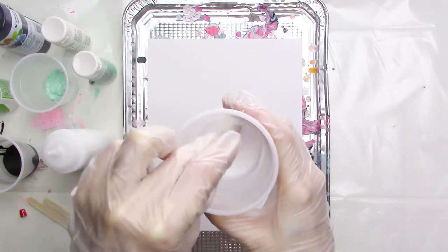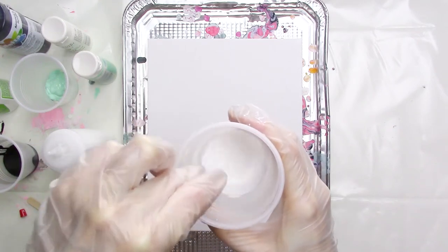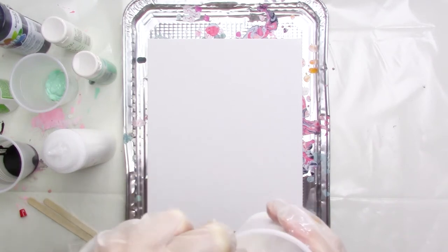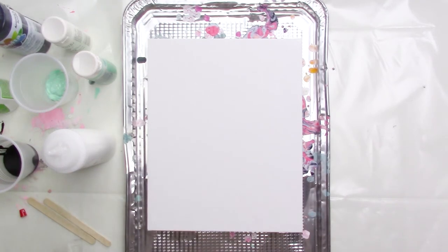Hey everyone, it's Kristin from Quebeca, and in this video I'll be showing you how to create cells in your acrylic pour paintings using silicone oil and isopropyl alcohol.